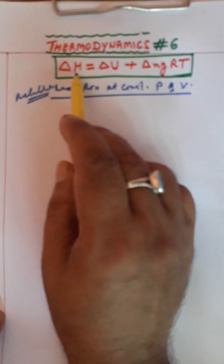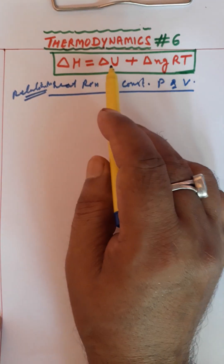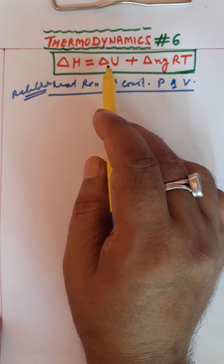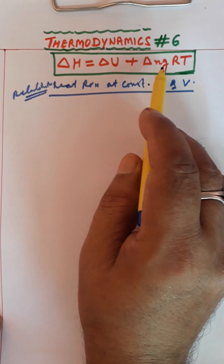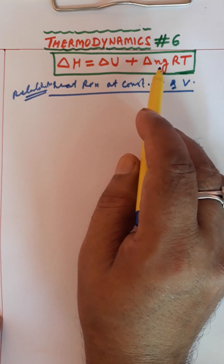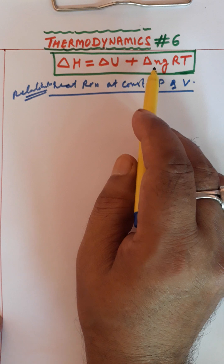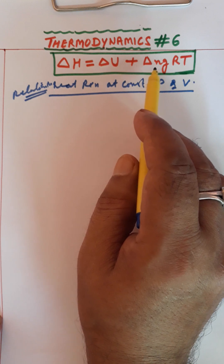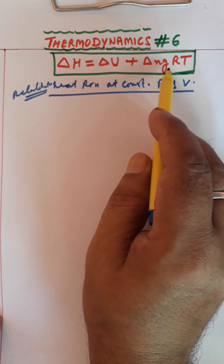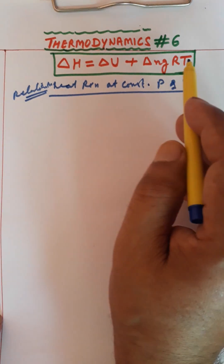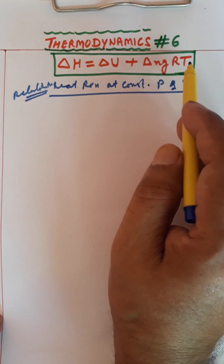यहाँ पर ΔH change in enthalpy है, ΔU change in internal energy है। ΔNg — यह number of moles है gaseous products और reactants का। R is the gas constant and T will be the temperature.